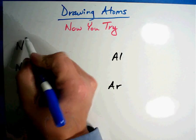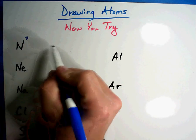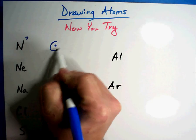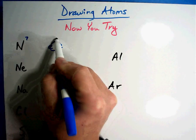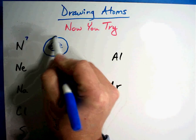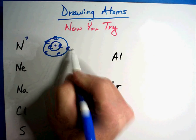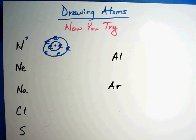Nitrogen is element seven. So what you should have is two electrons in the first, five - one, two, three, four, five - for a grand total of seven.